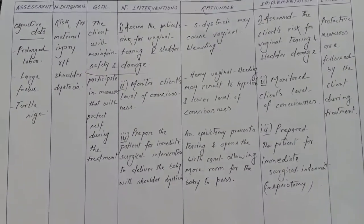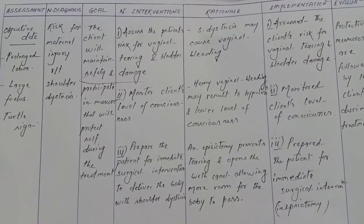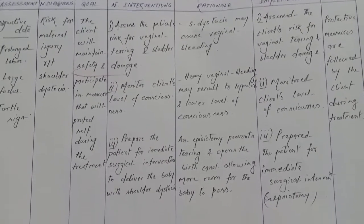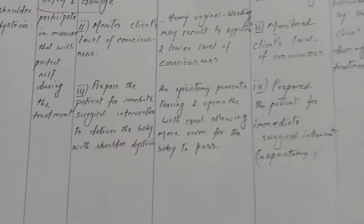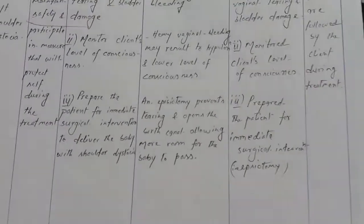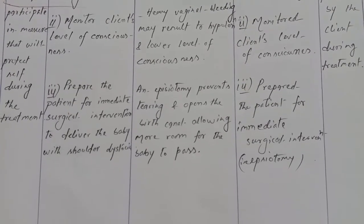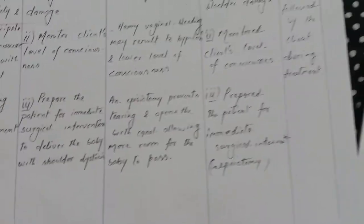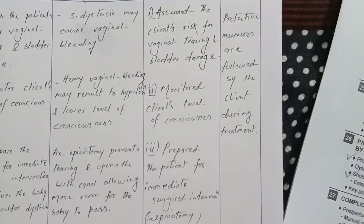Care plan — risk for maternal injury. Nursing interventions: assess patient's risk for vaginal tearing and bladder damage (rationale: shoulder dystocia may cause vaginal bleeding); monitor client's level of consciousness; prepare patient for immediate surgical intervention to deliver the baby — heavy vaginal bleeding may result in hypotension and decreased consciousness; episiotomy prevents tearing and opens the birth canal allowing more room for the baby. Evaluation: protective measures are followed by the client during treatment.